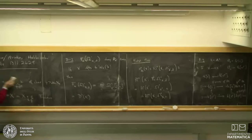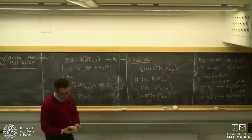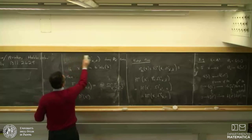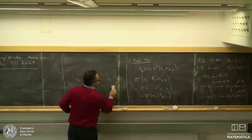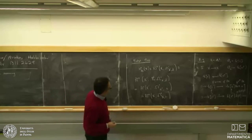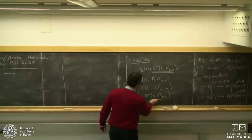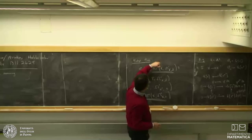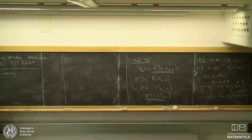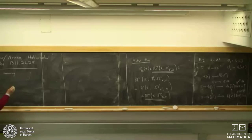Now there is a more geometric way — in terms of derived geometry — to understand the result of Deligne-Illusie. I want to realize the two complexes I'm comparing geometrically. If I look at omega dot of X′ with zero differential, this complex is closely related to the derived self-intersection of X′ inside the cotangent bundle T*X′.